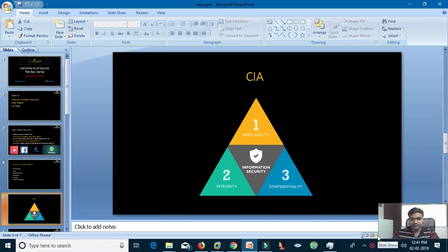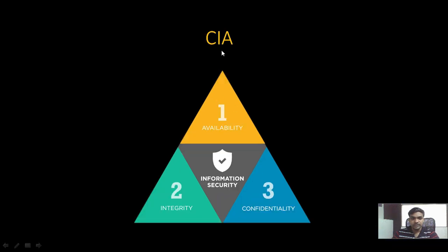CIA are the three pillars of information security. They are very important to understand the concepts of cybersecurity. C stands for Confidentiality, I stands for Integrity, and A stands for Availability.